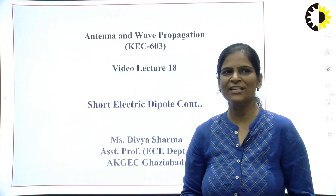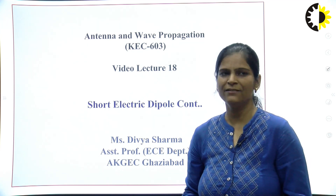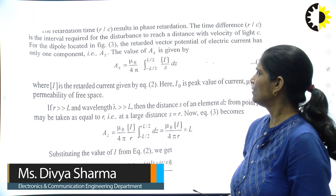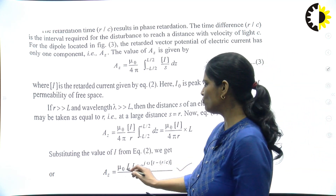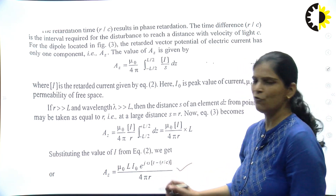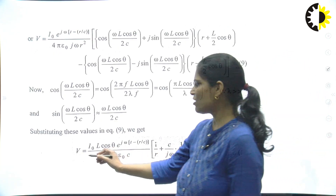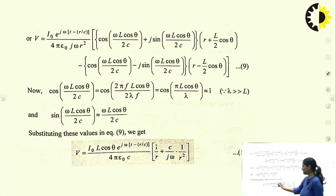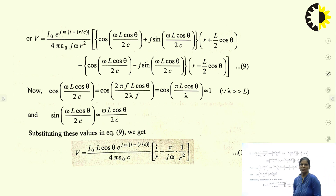Today's video lecture is on short electric dipole, continuing from the previous lecture. From the previous lecture, Az is equal to mu_0 * l * i_0 * e^(j(ωt - r/c)) / (4π). Also, V is equal to i_0 * l * cosθ * e^(j(ωt - r/c)) * [1/(r) + c/(jω * r²)] / (4π * ε_0 * c).